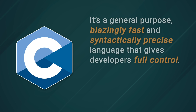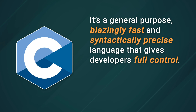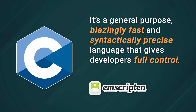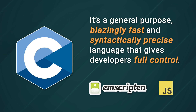C is a general-purpose, blazingly fast, and syntactically precise language that gives developers full control. And using Emscripten, which is an LLVM to WebAssembly compiler, you can compile your C program to WebAssembly or even JavaScript if that suits your fancy.